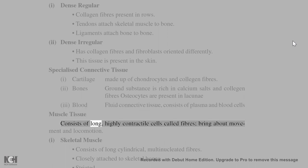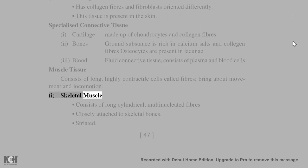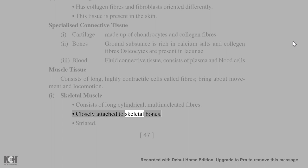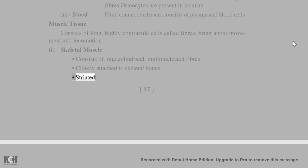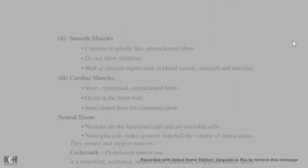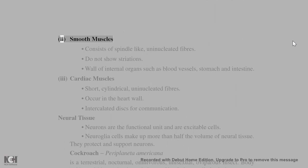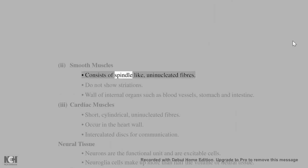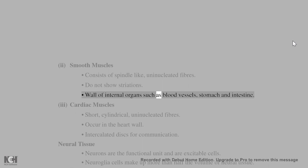Muscle tissue consists of long, highly contractile cells called fibers that bring about movement and locomotion. Skeletal muscle consists of long cylindrical, multi-nucleated, striated fibers closely attached to skeletal bones. Smooth muscle consists of spindle-like, uninucleated fibers that do not show striations; found in walls of internal organs such as blood vessels, stomach, and intestine.